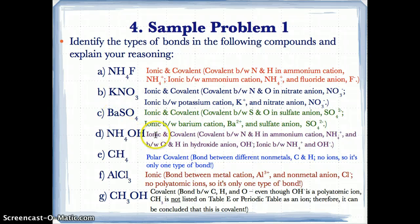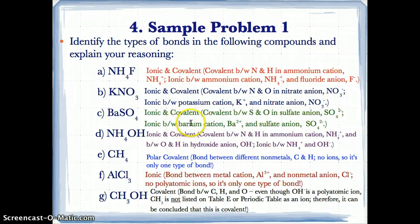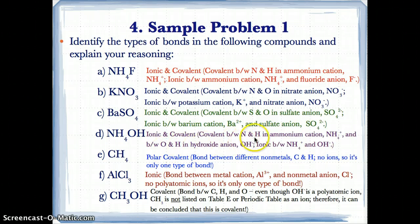For BaSO4: we have one polyatomic ion, SO4 2−, and a positive ion Ba2+ because barium is a metal on the periodic table with a charge of 2+. Since SO4 is 2− and Ba is 2+, we have positive and negative ions and a polyatomic ion, so it is ionic and covalent. For NH4OH: we have two polyatomic ions, NH4+ and OH−, and one positive and one negative ion, so it is ionic and covalent. The covalent bonds are between N and H in NH4+, and between O and H in hydroxide OH−. The ionic bond is between NH4+ and OH− because they are oppositely charged.